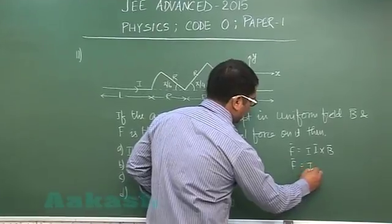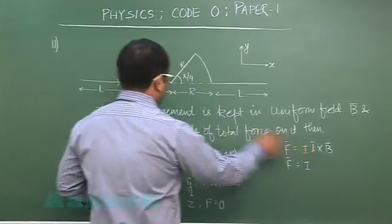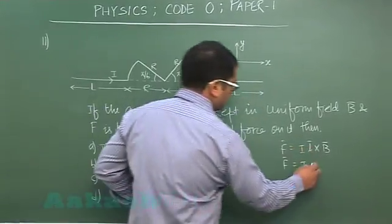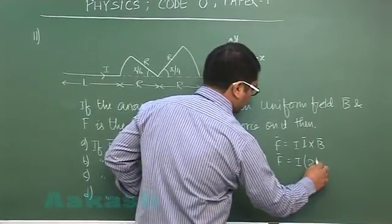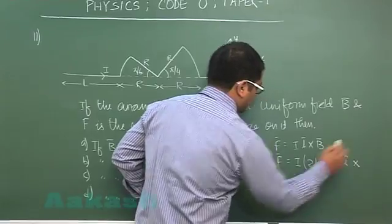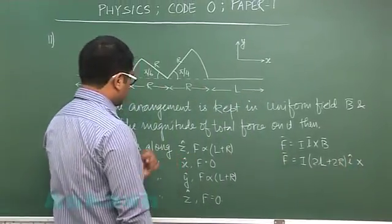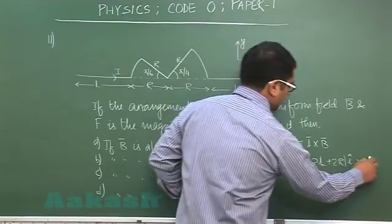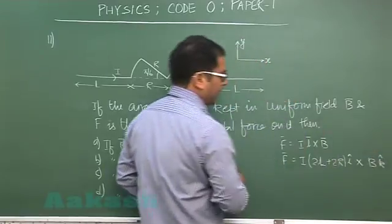That F would be I L is the total displacement and the total displacement is 2L plus 2R I cap cross. The magnetic field is given along Z direction so that would be B k cap.